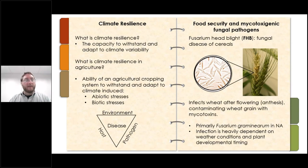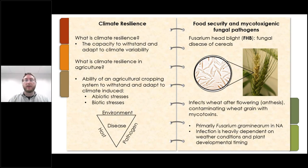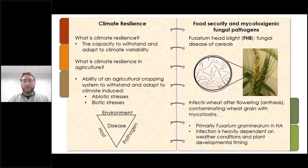One of our chief concerns is finding disease-resistant and climate-resilient crops. Climate resilience is the capacity to withstand and adapt to climate variability — specifically, the ability of an agricultural system to withstand climate-induced abiotic and biotic stresses. We're primarily concerned with the effects of elevated CO2 on wheat nutrition, and biotic stress from Fusarium head blight, a fungal disease of cereals primarily caused by Fusarium graminearum in North America, which infects wheat after flowering and contaminates grain with mycotoxins.